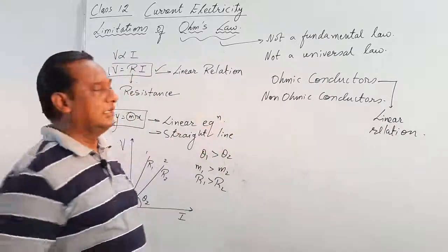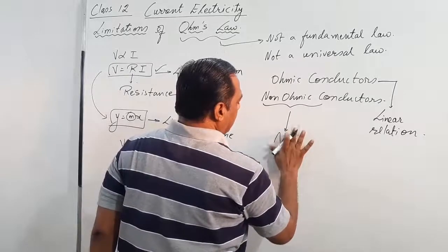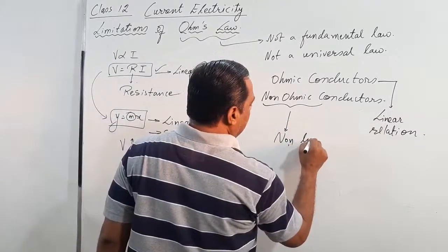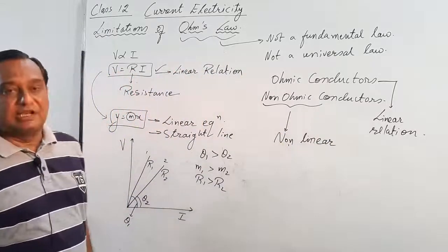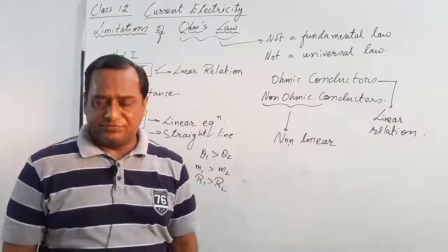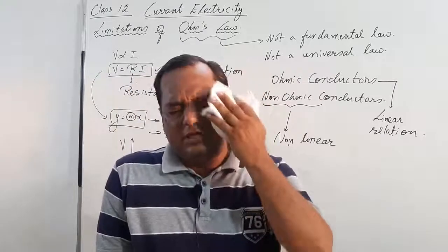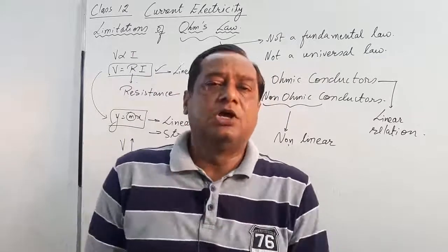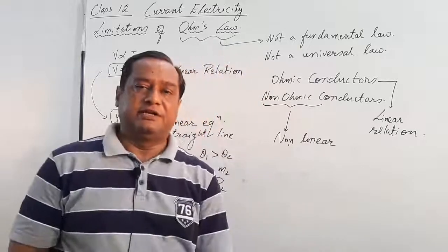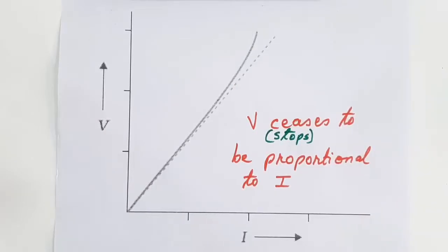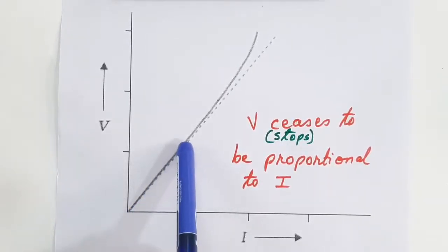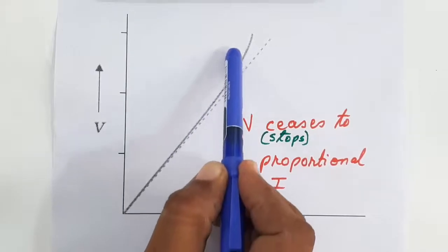Ohmic conductors always follow a linear relation, so their V-I graph is always linear. But the V-I graph of non-ohmic conductors is non-linear — that means the graph will not be a straight line. Let us understand the different types of deviations between V and I and what kinds of graphs we get.